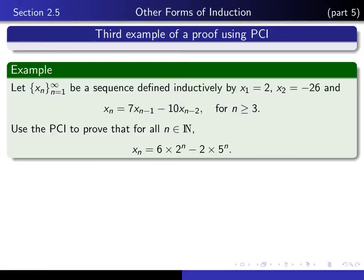We define a sequence x_n of real numbers inductively by putting x_1 to be 2, x_2 to be minus 26, and for all n greater than or equal to 3 we define x_n by the given recurrence equation. So the idea is that, for example, if you replace n by 3, this tells you that x_3 is equal to 7x_2 minus 10x_1, and using these two values we can calculate x_3.